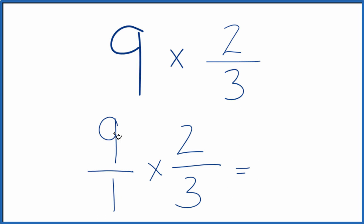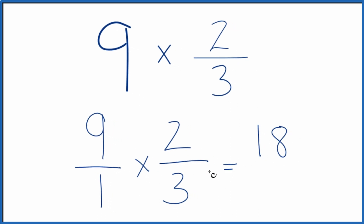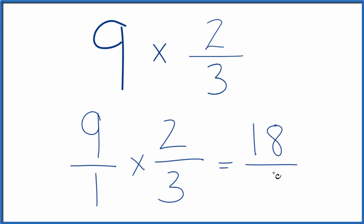So 9 times 2, that's 18. 1 times 3, that gives us 3. So 9 times 2 thirds equals 18 thirds.